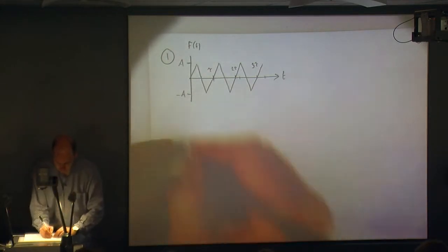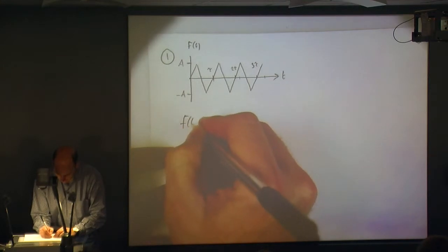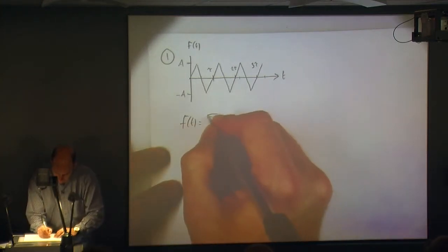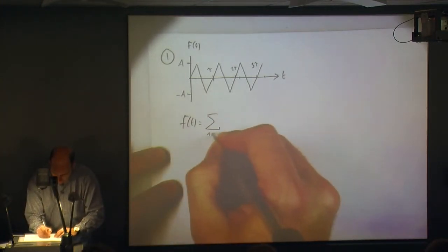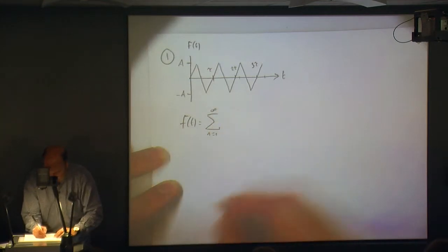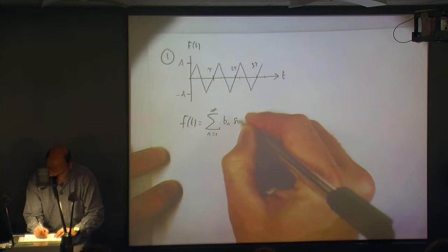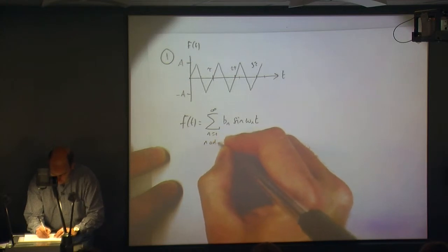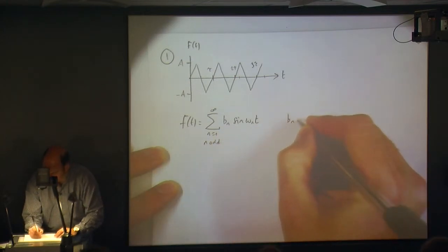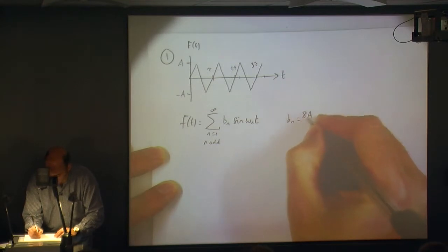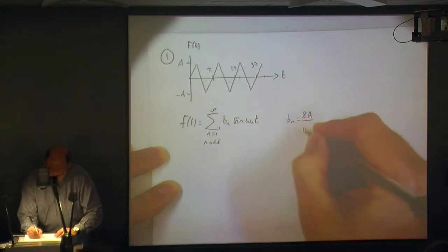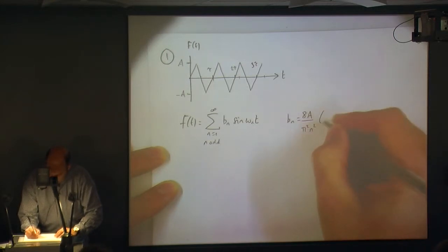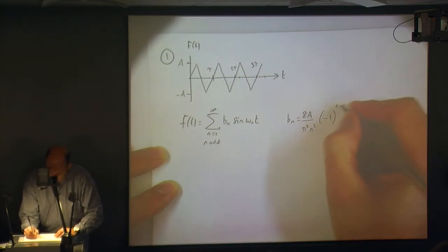I've given you the Fourier series. We know that f has been given to you, and it's the sum from n equals 1 to infinity of b_n sine(ω_n t). The n is odd only, and b_n is 8a divided by π² n² times (−1)^((n−1)/2).